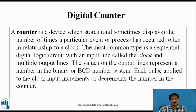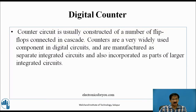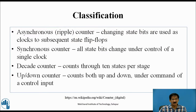A digital counter is a device which stores the number of times a particular event or process has occurred, often in relation to a clock. The most common type is a sequential digital logic circuit with an input line called the clock and multiple output lines. The values on the output lines represent a number in binary or BCD number system. Each pulse applied to the clock input increments or decrements the number in the counter. Digital counters are constructed of flip-flops connected in cascade, and are classified as asynchronous (ripple) counters and synchronous counters, as well as decade counters and up-down counters.